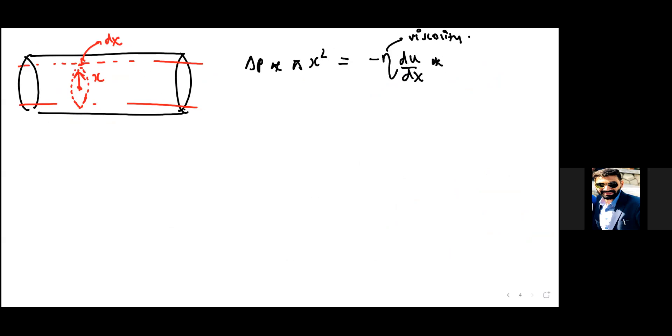And multiply it with 2π, not r, but xL. So if we simplify this equation, what we get is minus η du/dx equals delta p divided by L multiplied by x by 2. Now you can take dx.